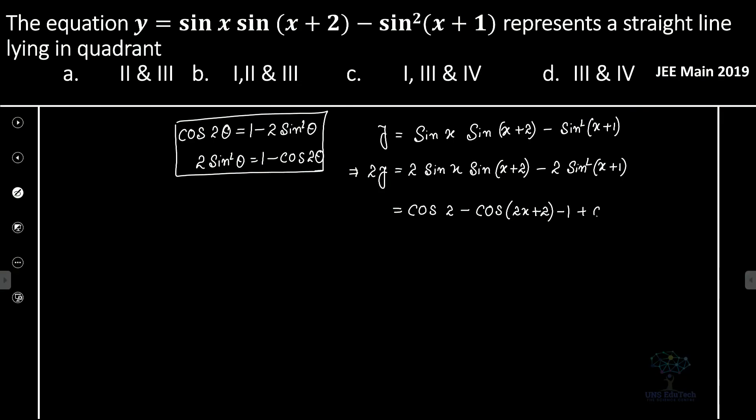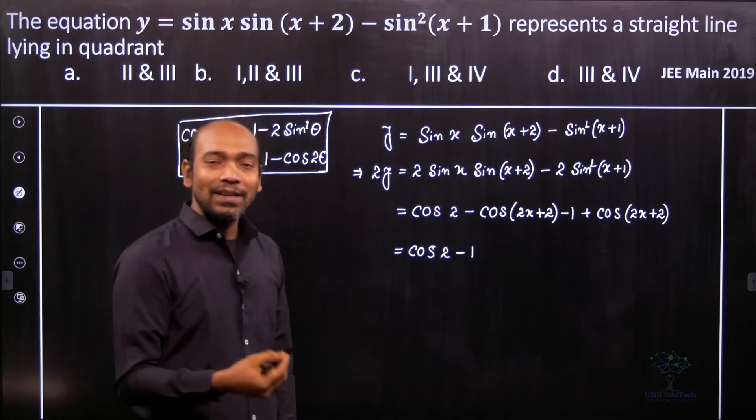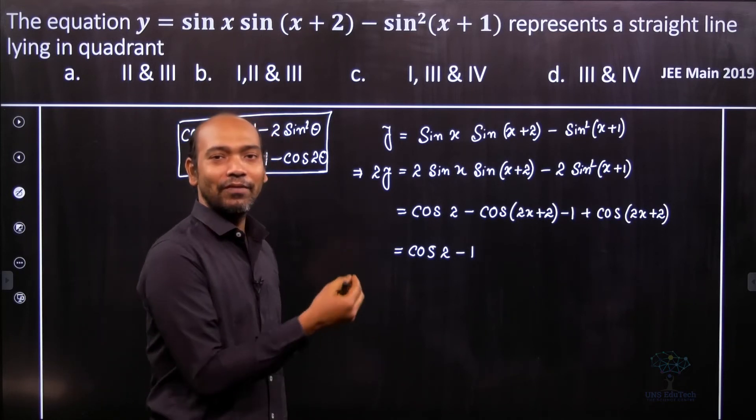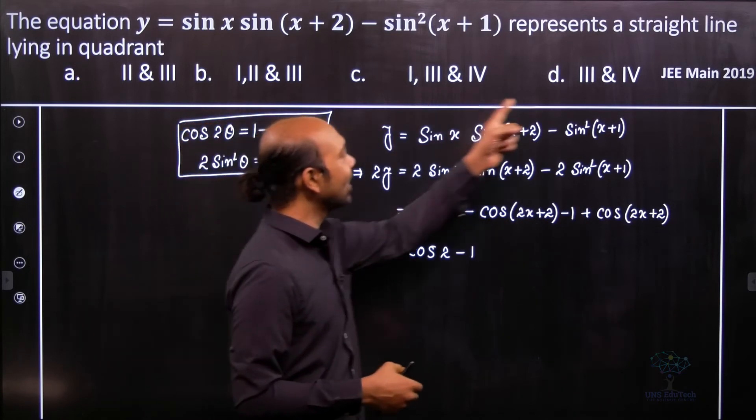So it is minus 2 sin², which equals minus(1 - cos 2(x + 2)). The cos term gets cancelled, so at the end we have cos 2 minus 1.